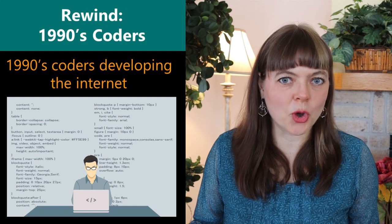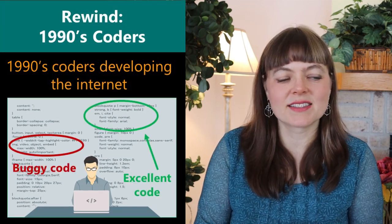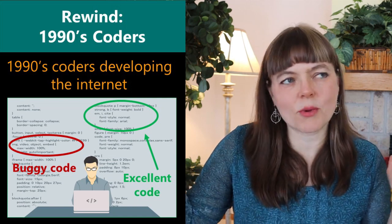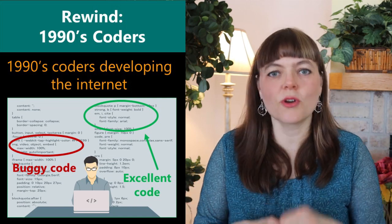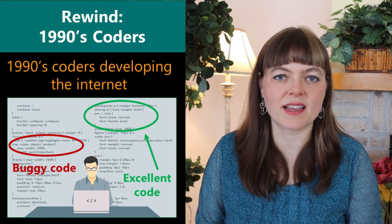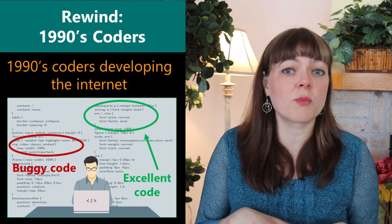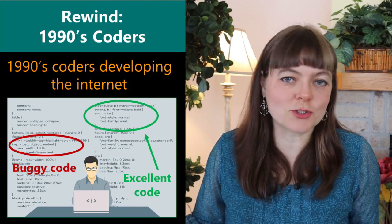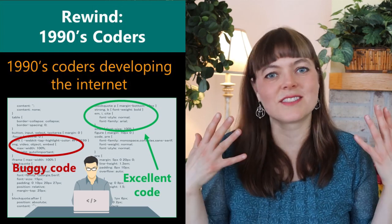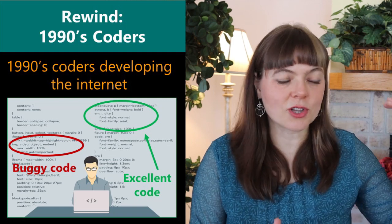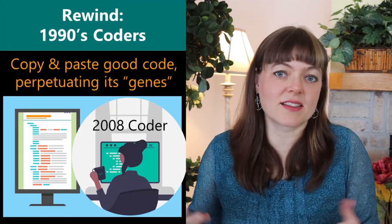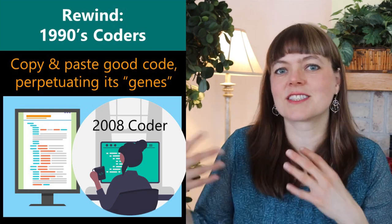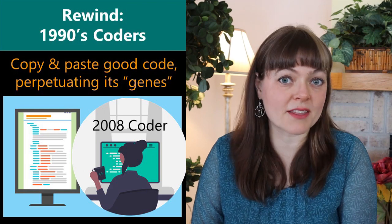As you might imagine, some of that code was kind of buggy. There were parts of the code that made it difficult to click through to other sites on the website, that sort of slowed down the process of purchasing things on the website. And what happened, of course, is the code that was well written and efficient, that code perpetuated into the future, because coders don't always start coding from scratch. A lot of times they'll look through existing code, copy and paste the stuff that's working, and just update the parts that are slow or buggy or causing problems.